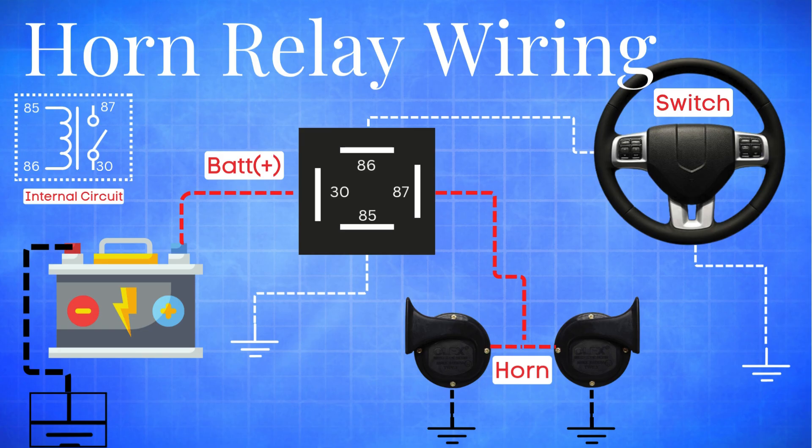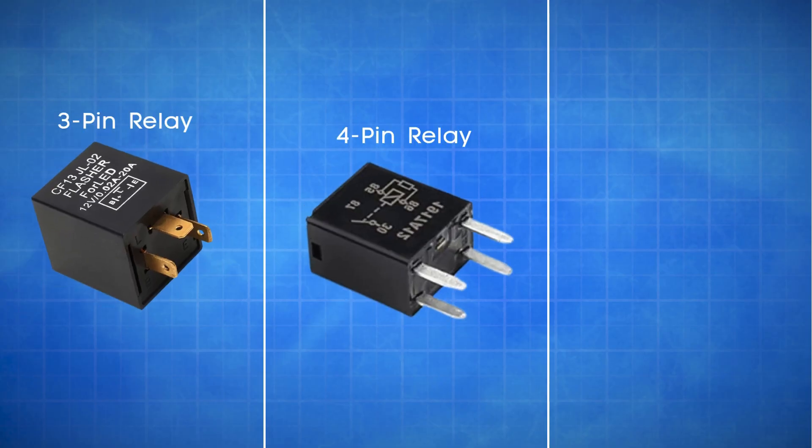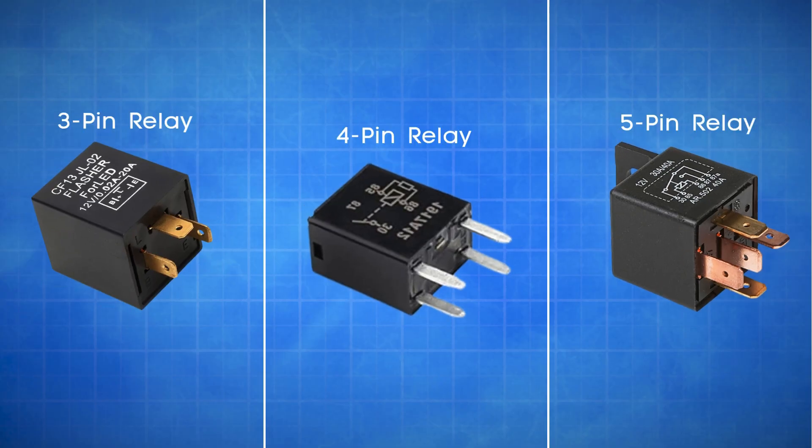The most common types of horn relays are 3-pin relays, 4-pin relays, and 5-pin relays. Each type has a slightly different wiring setup and functionality, and understanding how they work is key to diagnosing or designing a circuit. In this video, we'll break each one down clearly so you can understand how to wire them and what each pin actually does.